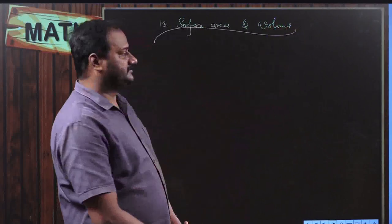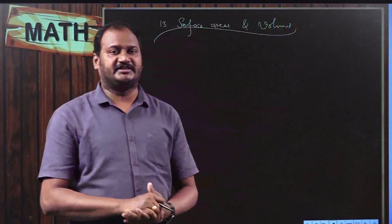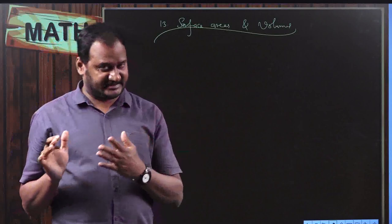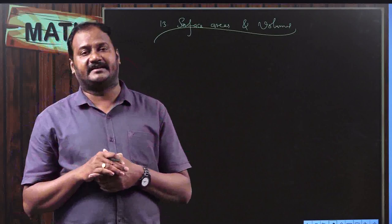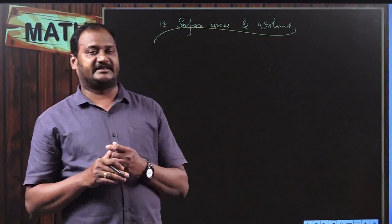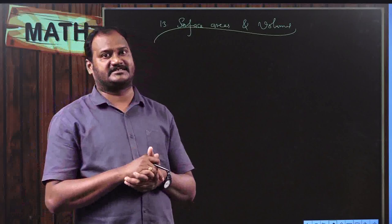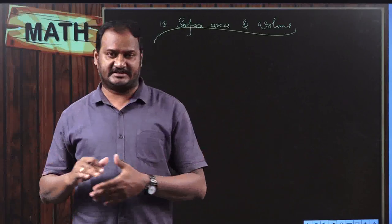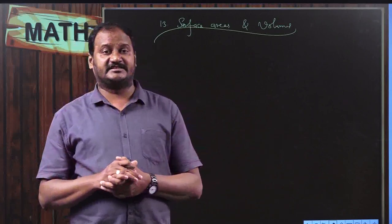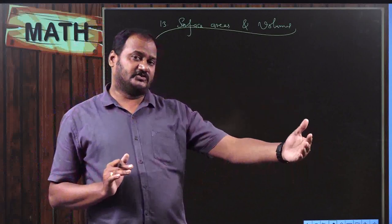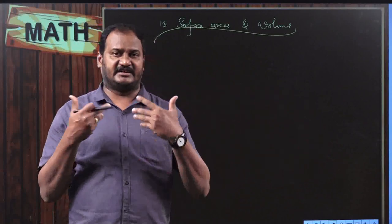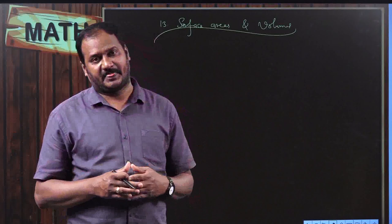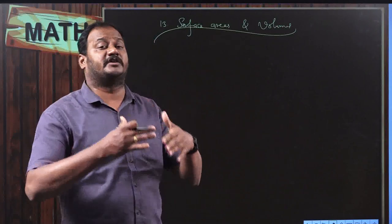So what is this topic all about? In this concept of surface areas and volumes, whatever we discussed in Grade 9, we discuss the same thing. But in Grade 10, in addition to that, we discuss about one special solid called frustum of a cone. In Grade 9 we discussed about individual solids — when the dimensions of a cube are given, we are asked to find the surface area, the volume, or the material required to make a box. These kinds of problems are exclusively on one particular solid.